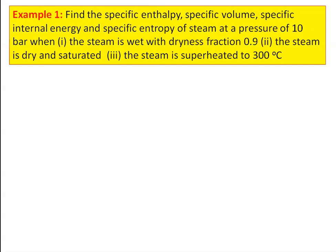This is the first example: find the specific enthalpy, specific volume, specific internal energy, and specific entropy of steam at a pressure of 10 bar. Condition 1: the steam is wet with dryness fraction 0.9. Condition 2: the steam is dry and saturated. Condition 3: the steam is superheated to 300 degrees Celsius.